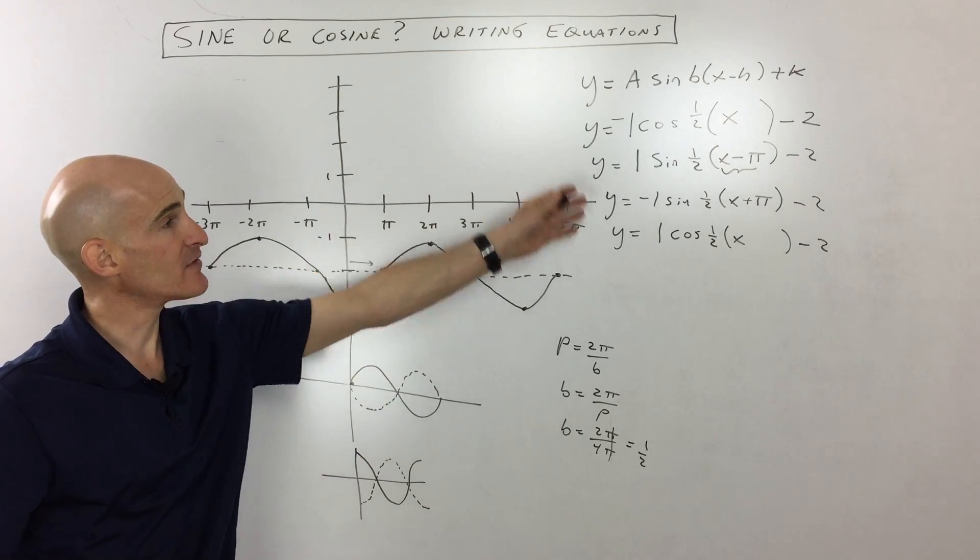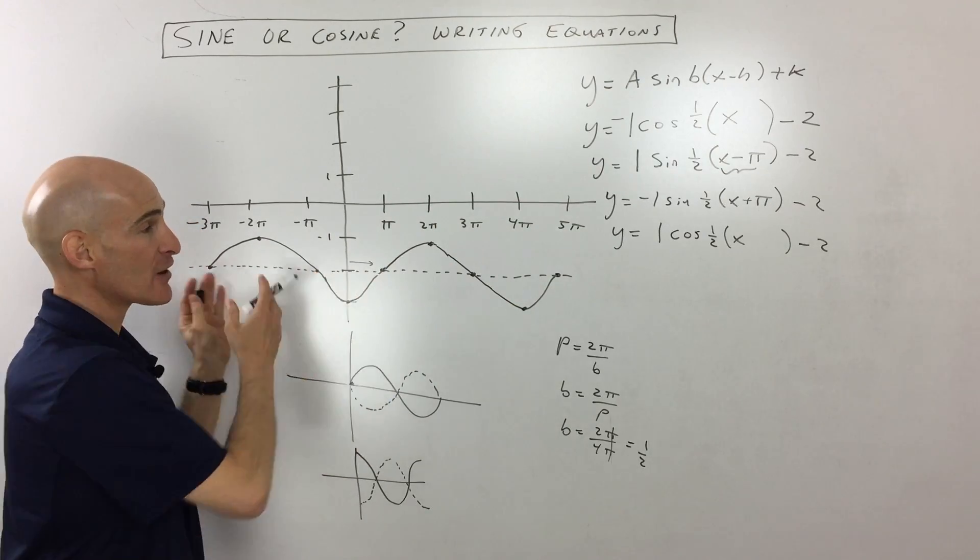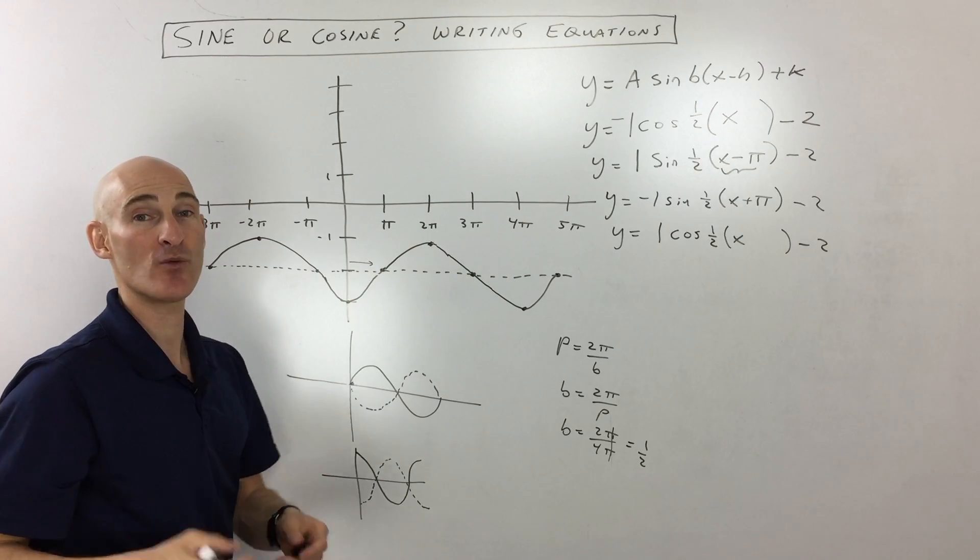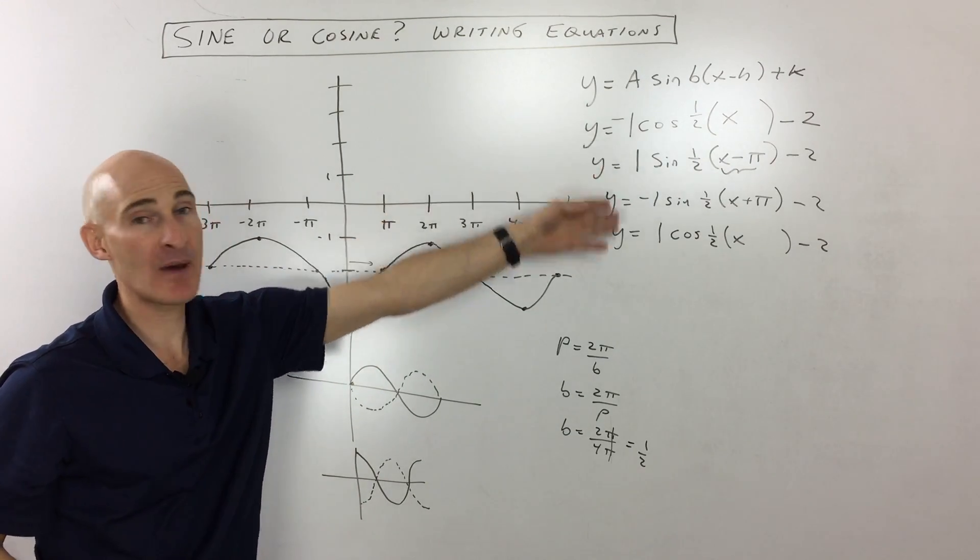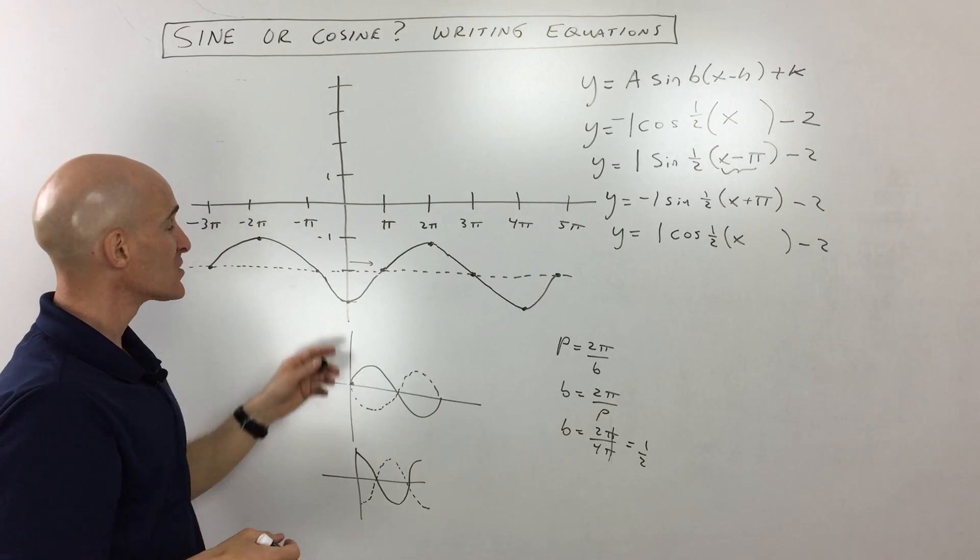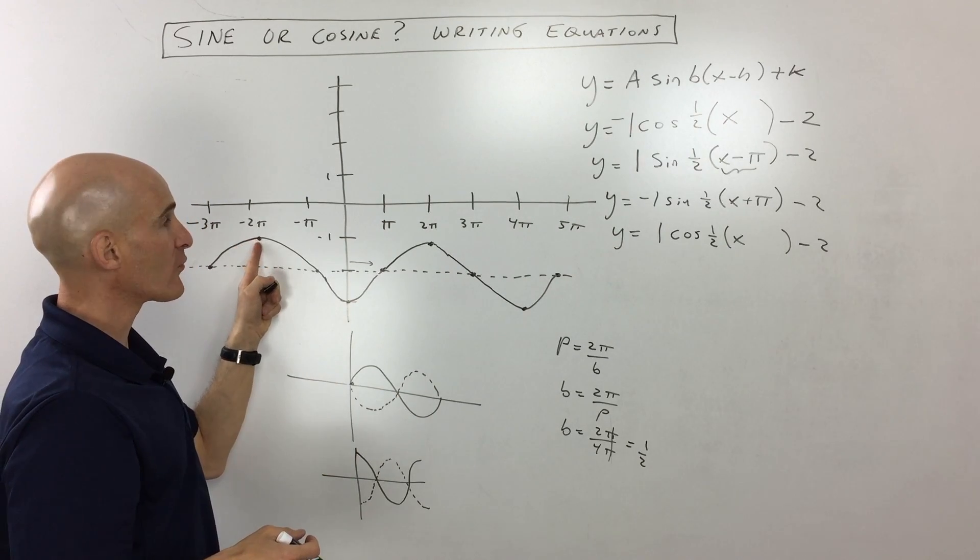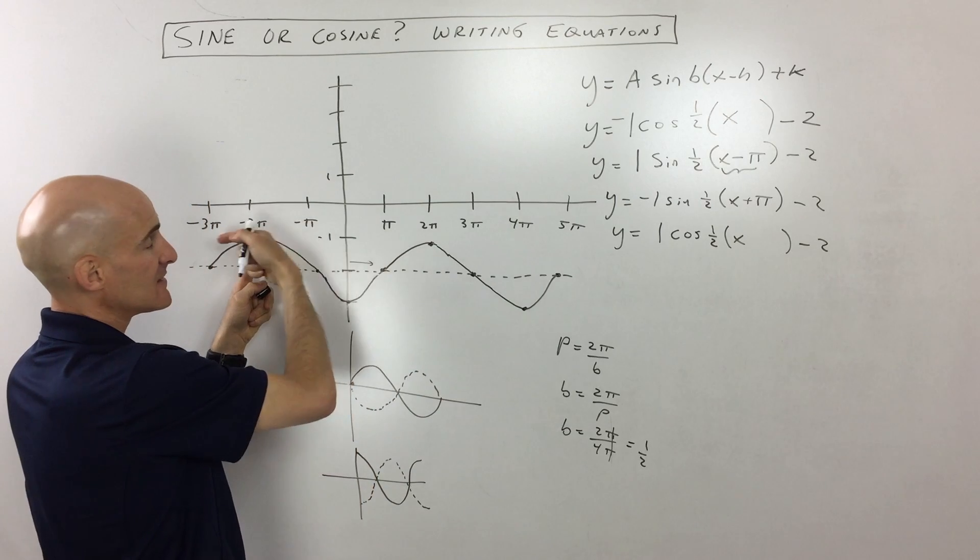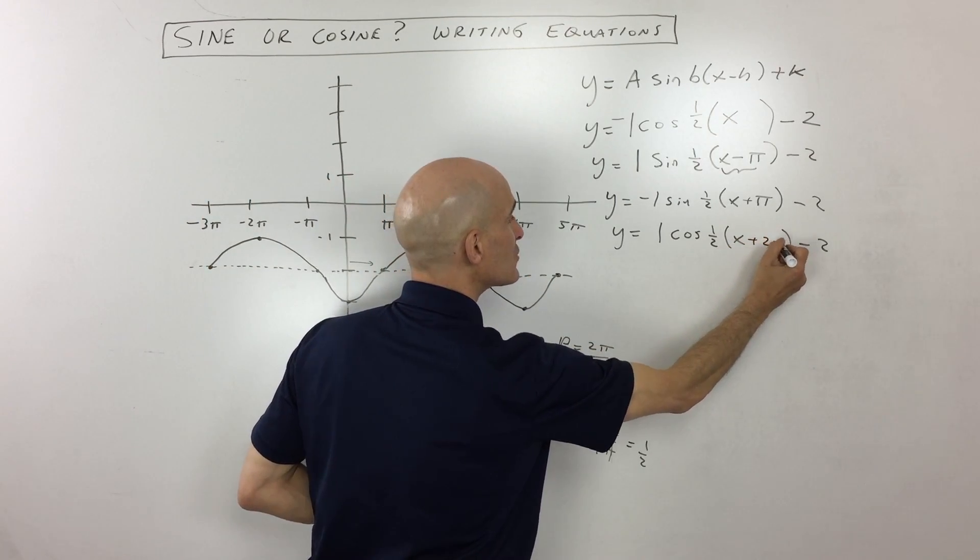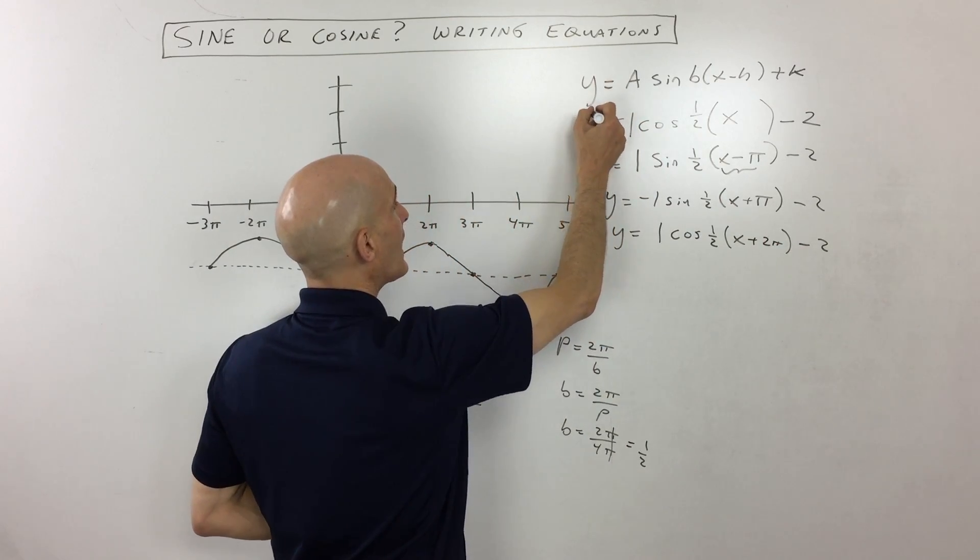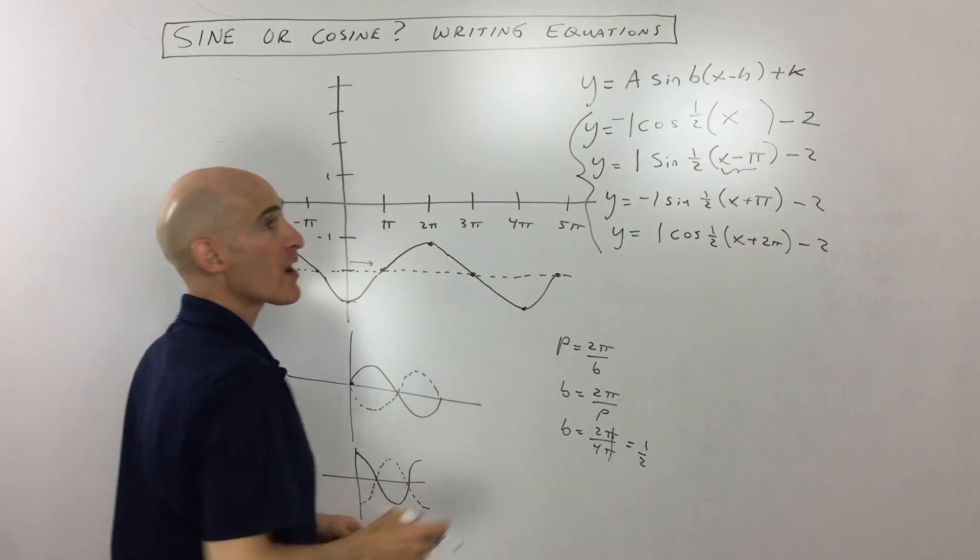There's an infinite number of ways to write this equation for this graph. It's just a matter of how far you want to shift it left and right, whether you want to use sine or cosine, and whether you want it to be multiplied by negative one, meaning it's reflecting. So let's just go ahead and use this point over here. So that means it's shifting to the left two pi, which means that this is going to be plus two pi. So any one of these would be the correct answer.